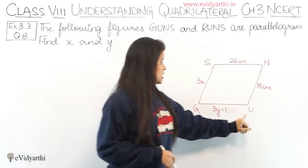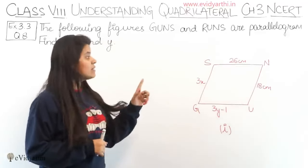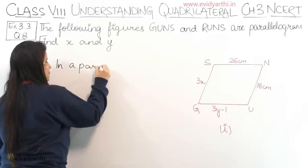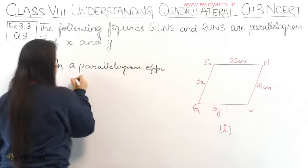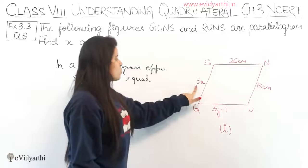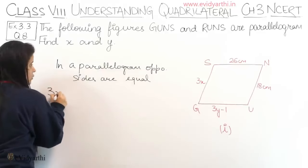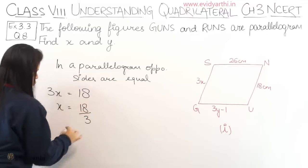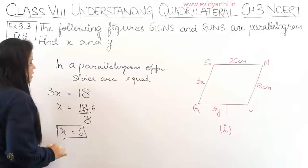First, let's look at the first part which is GUNS. We need to find the values of X and Y. Since it is given that these are parallelograms, we know that in a parallelogram opposite sides are equal. So 3X equals 18, which gives us X equals 18 divided by 3, so X equals 6.